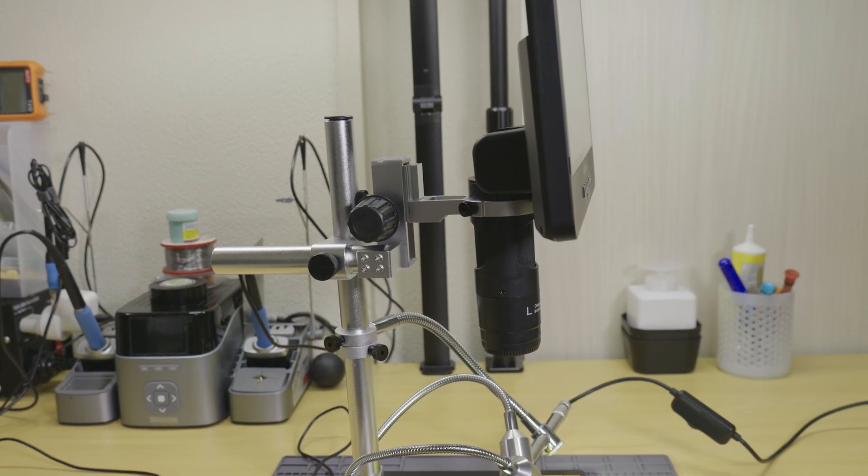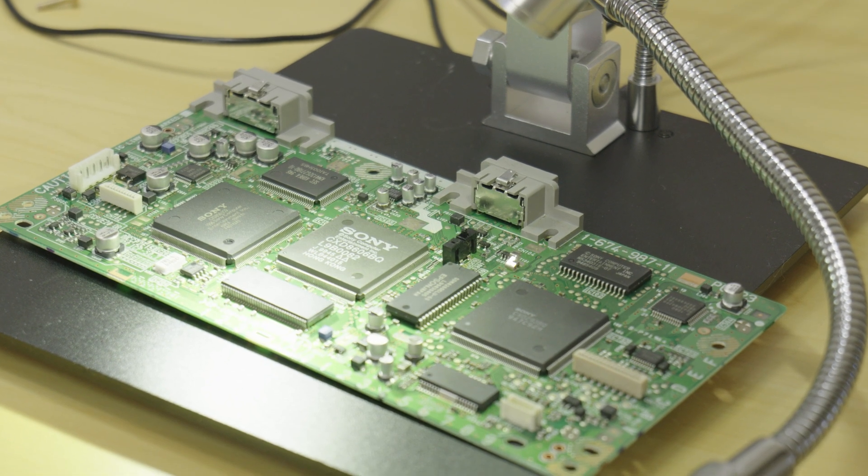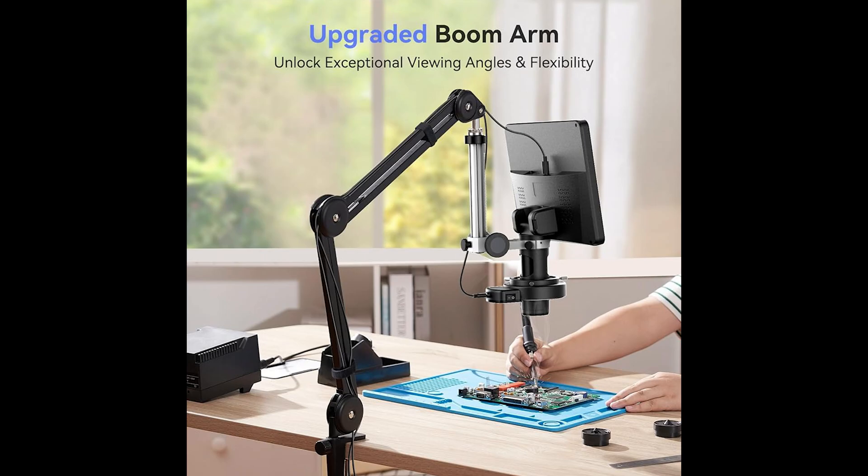The microscope comes with an all-aluminum stand which is good for small PCBs. If you want to use this with larger PCBs like laptops or console boards, boom arm may be a better option for you.